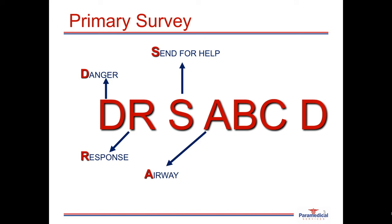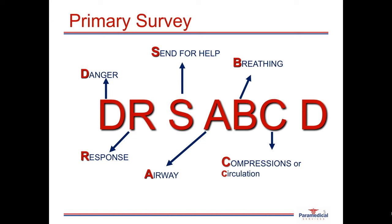Once we have checked the airway, we check breathing — are they breathing normally or inadequately? If somebody is not breathing or not breathing adequately, we need to start compressions or CPR. However, if somebody is breathing adequately, we check their circulation. Feeling for a pulse can be difficult, so another way is looking at their colouring — very pale indicates poor circulation, while normal skin tone indicates good circulation. D stands for defibrillation in CPR, but can also be interchanged for looking for deformities or injuries to the body.